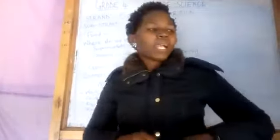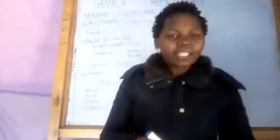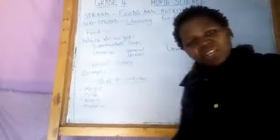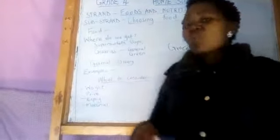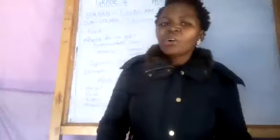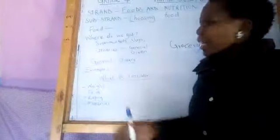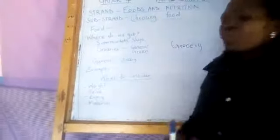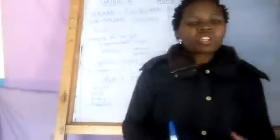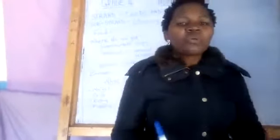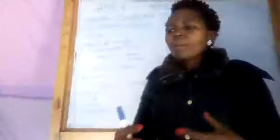Examples of food we get from a general grocery: we have rice, we can get milk, we can get cooking oil, we can get tea bags, and all that. Those are examples of foods we can get from a general grocery.